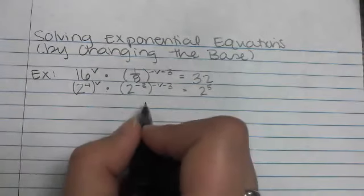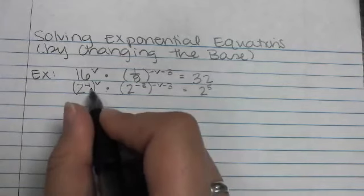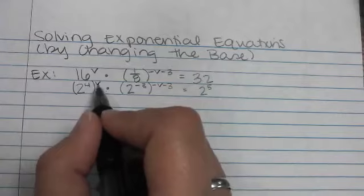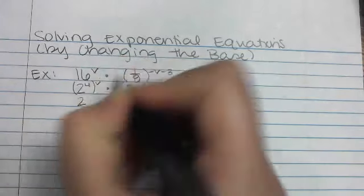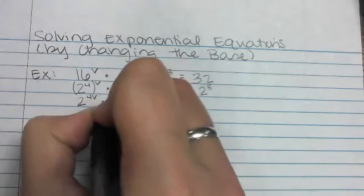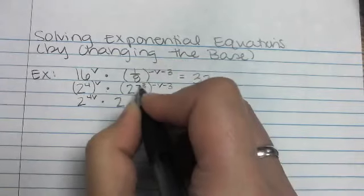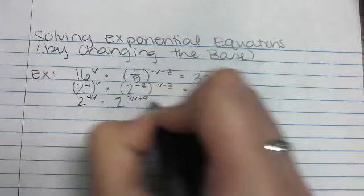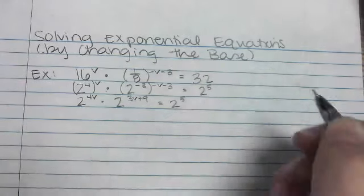Now on the left side, I have to simplify this a little bit. So if you guys recall, the property of exponents tells us if you have an exponent raised to an exponent, you should multiply those. So that's 2 to the 4v, and this is 2 to the 3v plus 9 equals 2 to the 5th.